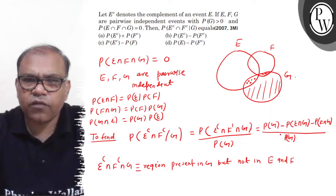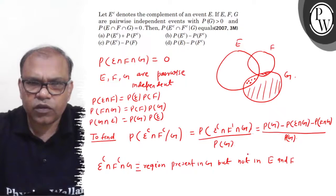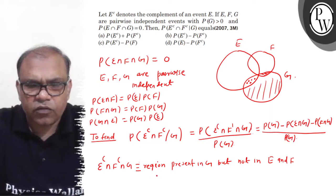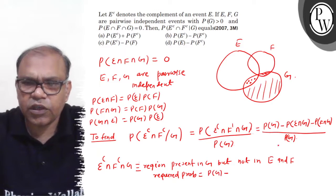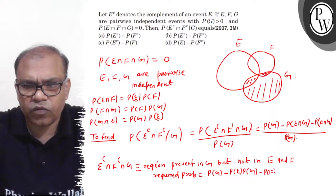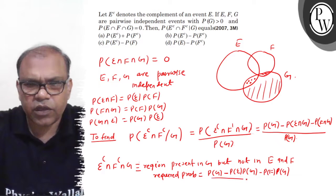Now, since E, F, G are pairwise independent, the required probability will be P(G) minus P(E ∩ G), which is P(E) into P(G), minus P(F) into P(G), divided by P(G).